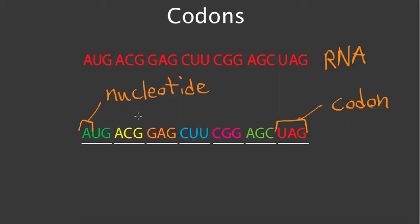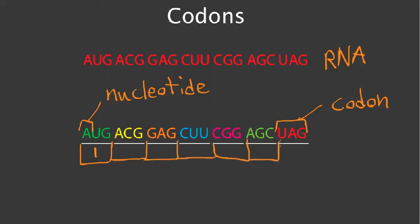What each of these codons does is code for an amino acid. So AUG here codes for an amino acid — amino acid 1. With each of these codons coding for a different amino acid.